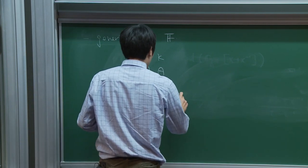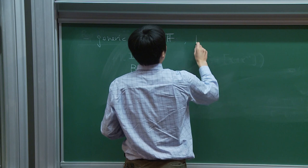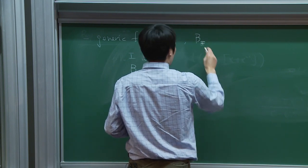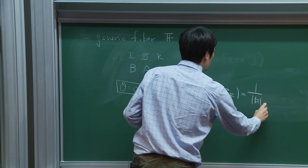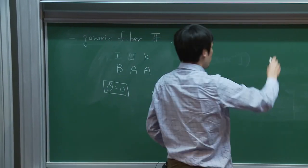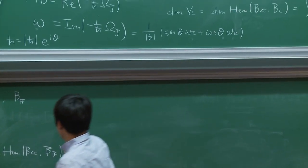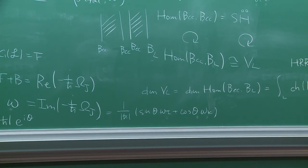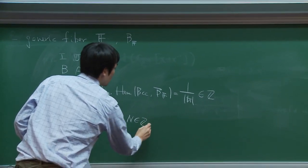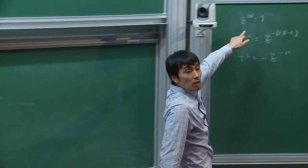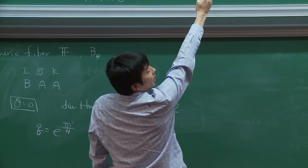You can compute the dimension of Hom(BCC, B_F) and get 1/ℏ. Since by Grothendieck-Riemann-Roch this must be an integer, using the parameter matching between Q and ℏ, this gives that Q must be a root of unity: Q = e^{πi/N}, where N is an integer. This matches the first condition I wrote down, so the generic fiber gives the first condition for finite-dimensional representations.